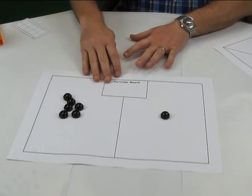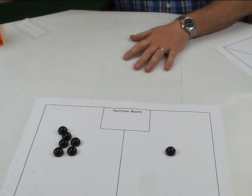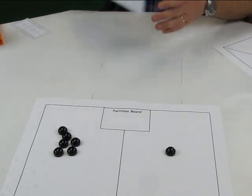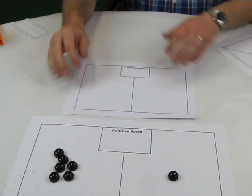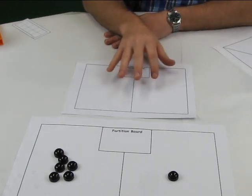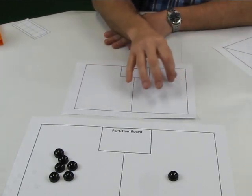At some point you may want some recording of this. That's an A3 partitioning board. We might get the children to record on an A4 sheet, and they might do some drawings.